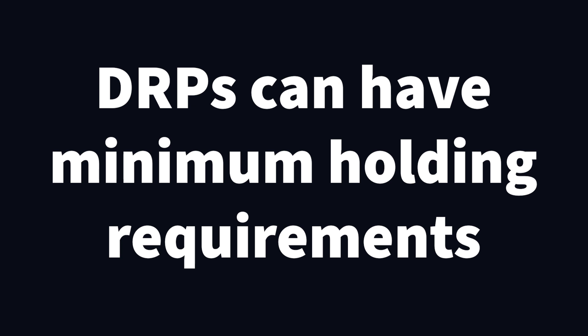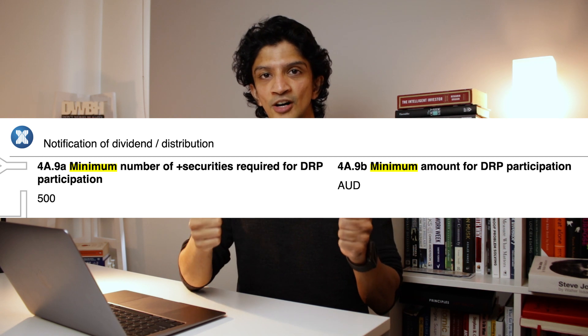Something else to know is that some DRPs have requirements around minimum holdings. I got caught up in this because I didn't read the documentation clearly for one of the companies I had a DRP set up in. I made a fuss on Instagram saying I didn't have my plan turned on and got paid out in cash. When I called the investor center, they took me through the documentation — one requirement for this particular company was you needed a minimum of 500 shares before being eligible for the DRP.